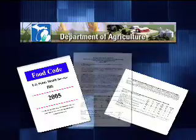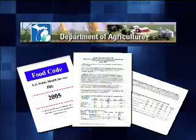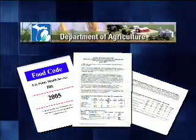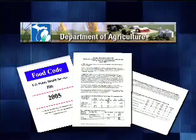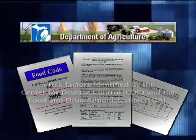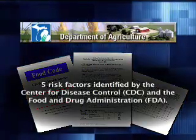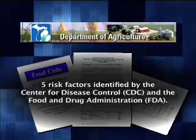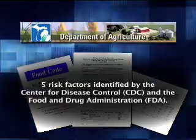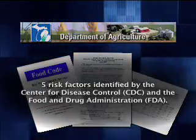The Michigan Department of Agriculture has set a goal to reduce the risk factors that cause foodborne illness in food service establishments. There are five risk factors identified by the Center for Disease Control and the Food and Drug Administration as the most common causes of foodborne illness.